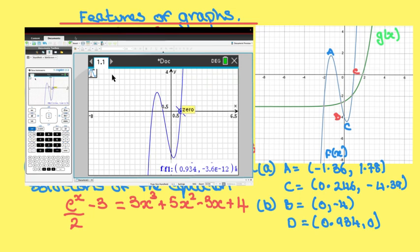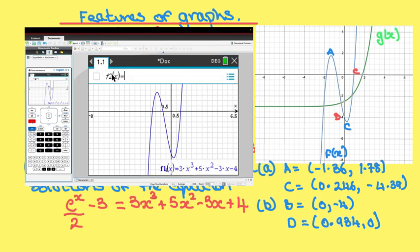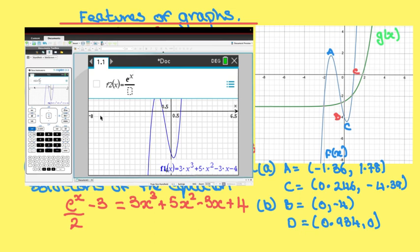We want to type in a second graph, so press tab. Now type in the equation of the graph. We're going to use a fraction, so we're going to control divide. So we want e^(x/2) - 3, press enter and there is our second graph.